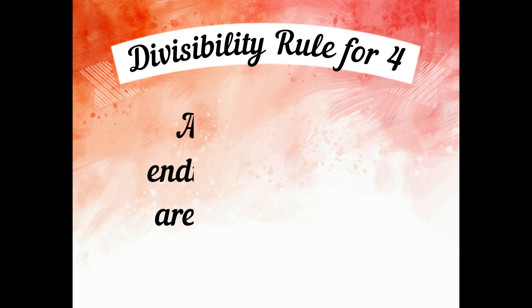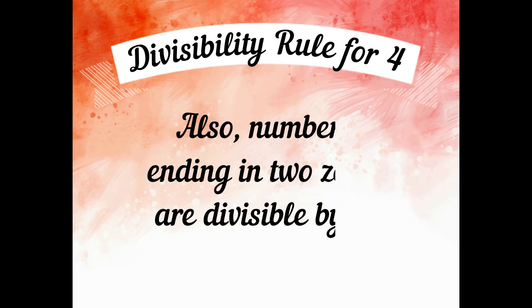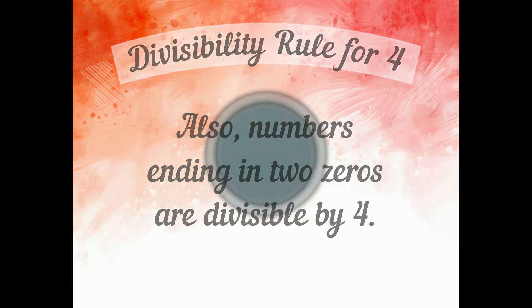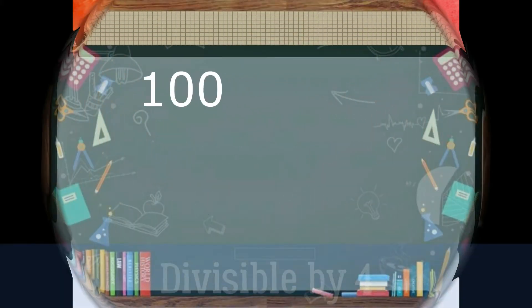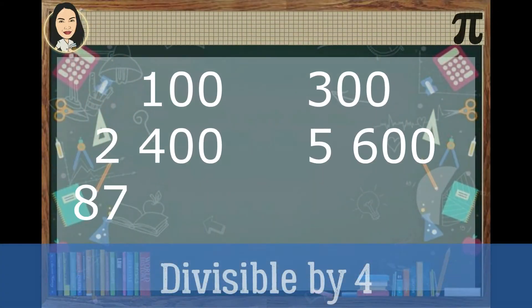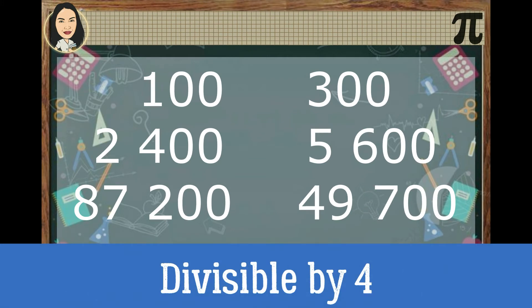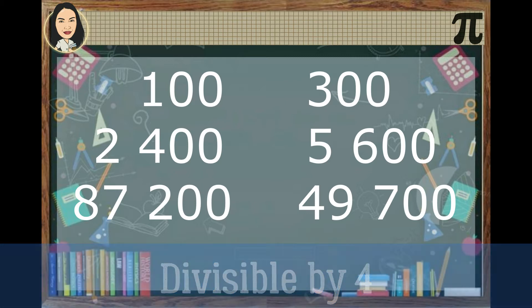Divisibility Rule for 4 also states that numbers ending in 2 zeros are divisible by 4. Examples are 100, 300, 2,400, 5,600, 87,200, and 49,700.